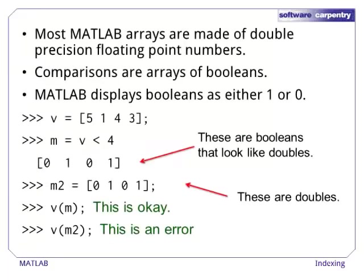The difference is apparent in this example. Here, the array M is the result of a comparison, and we can see that a 1 means that the corresponding element of V was less than 4. The array M2 is hand-constructed with the same pattern as M, but the values are doubles, since this is the default. Try to use M and M2 as an index. The result of the comparison, M, can be used, but M2 fails because the indices must be integers, not doubles.